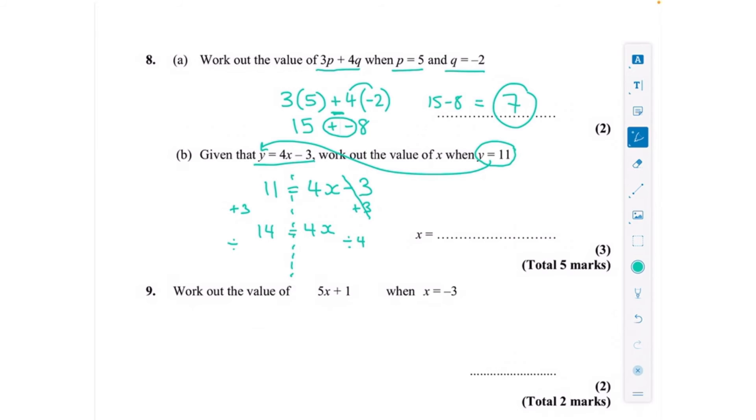And 14 divided by 4, well dividing by 4 is the same as halving and halving again, that will always divide by 4. So 14 halved is 7 and half of that is 3.5, or you could use a calculator if you weren't sure. x would be 3.5.